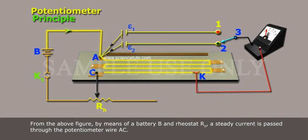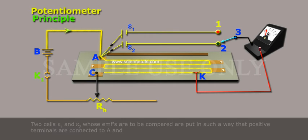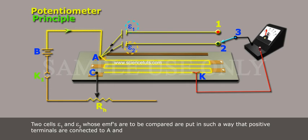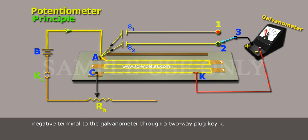From the above figure, by means of a battery B and rheostat RH1, a steady current is passed through the potentiometer wire AC. Two cells, whose EMFs are to be compared, are put in such a way that positive terminals are connected to A and negative terminal to the galvanometer through a two-way plug key.